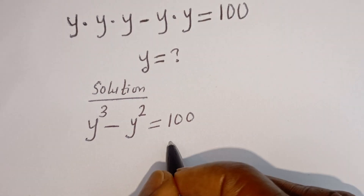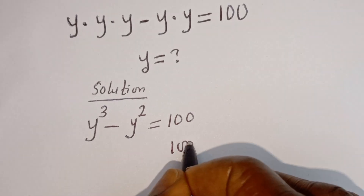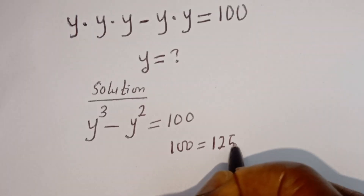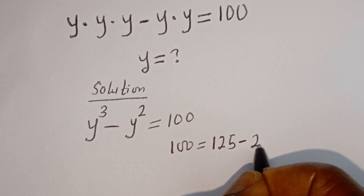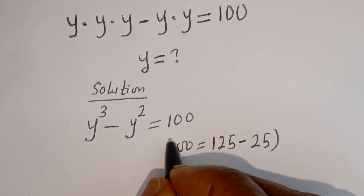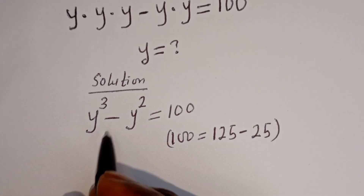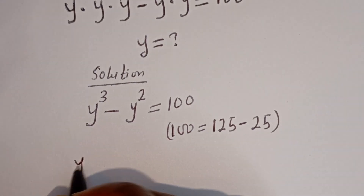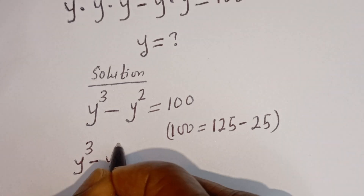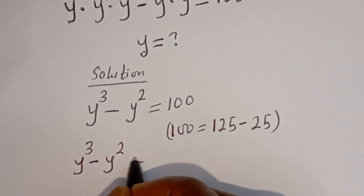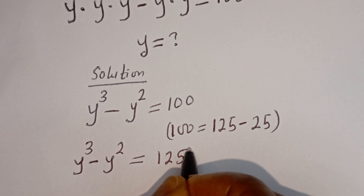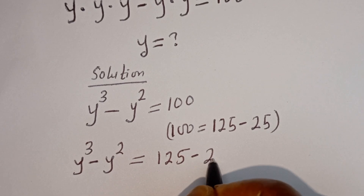Now, 100 is equal to 125 minus 25. So here we have y to the power of three minus y squared is equal to 125 minus 25.